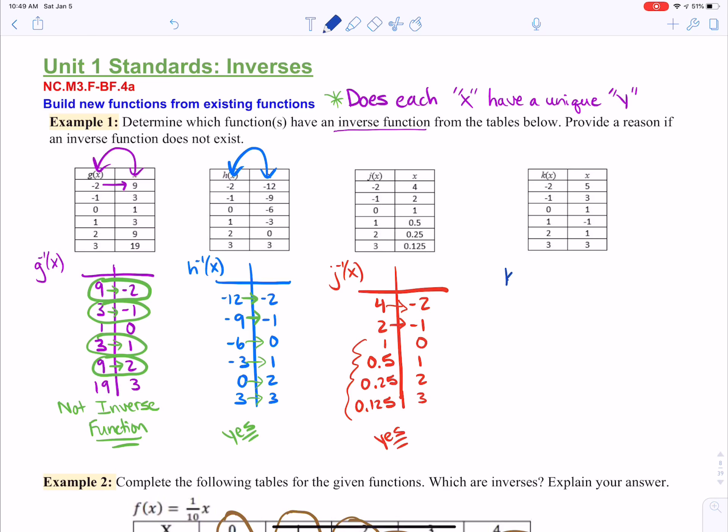And let's look at the last one. So the inverse for k of x would be to switch the x's and the y's. So we have five negative two, three negative one, one zero, negative one one, one two, and three three.